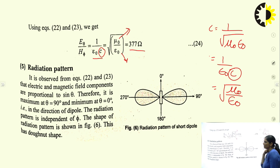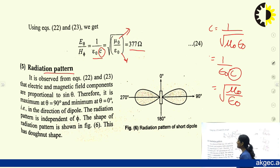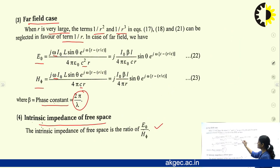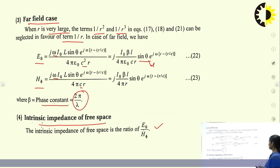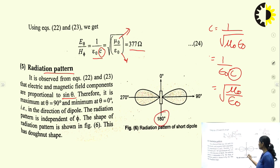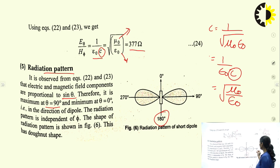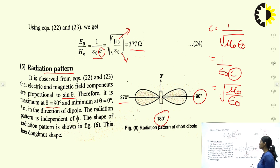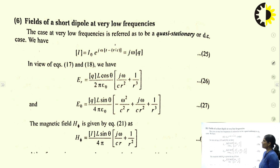For the radiation pattern, the previous equations are in the form of sinθ. When θ = 0° or θ = 180°, there is no or minimal radiation. When θ = 90° or θ = 270°, radiation is maximum. So the shape of the radiation pattern is a torus (donut shape) corresponding to the sinθ dependence.